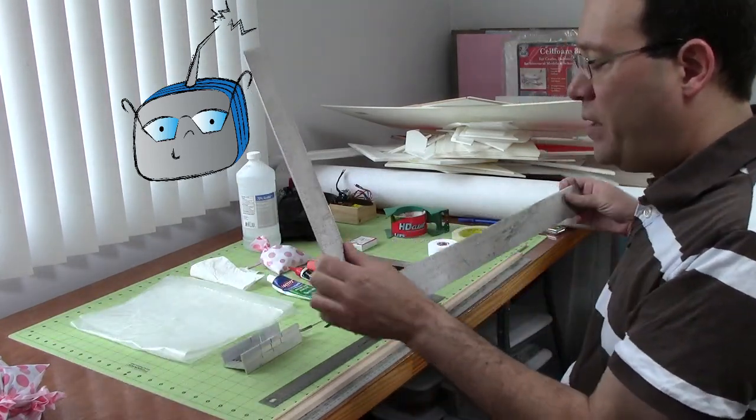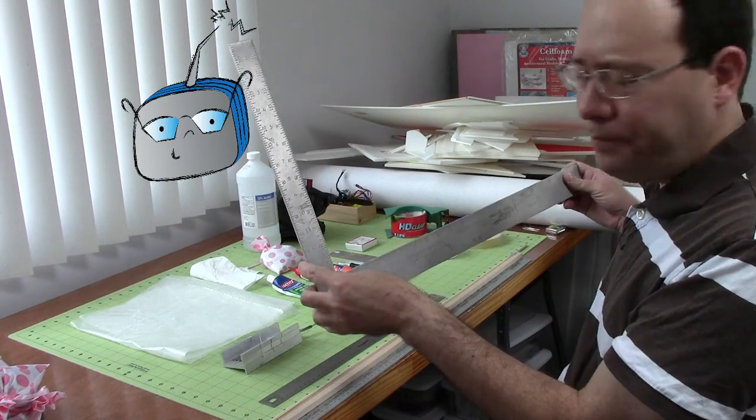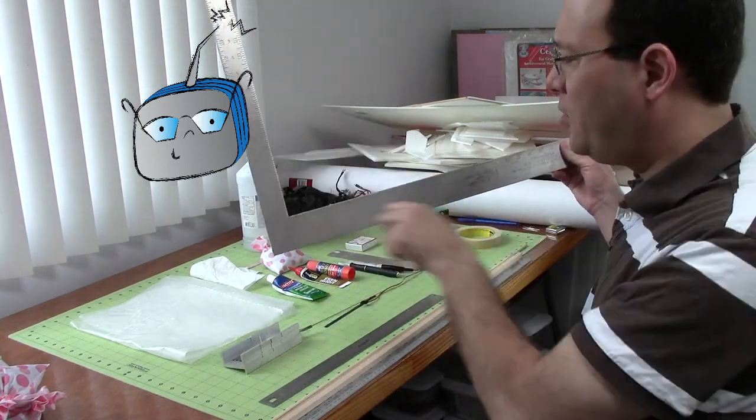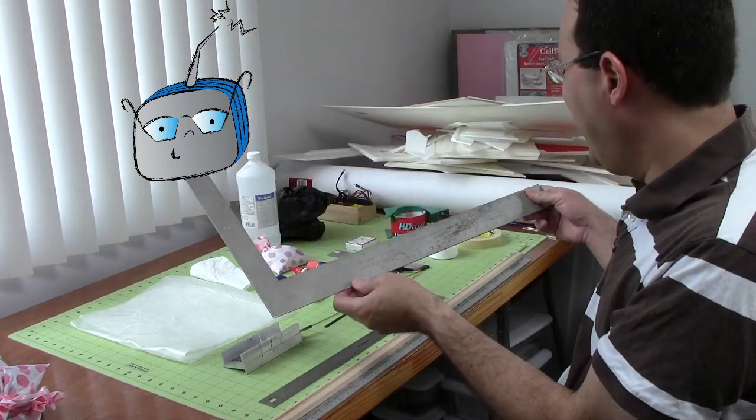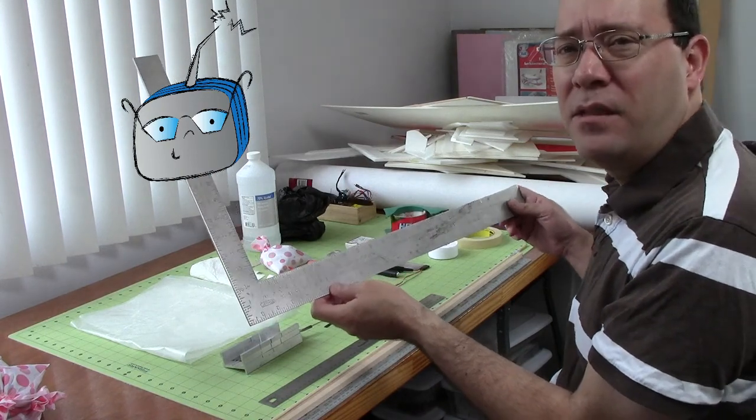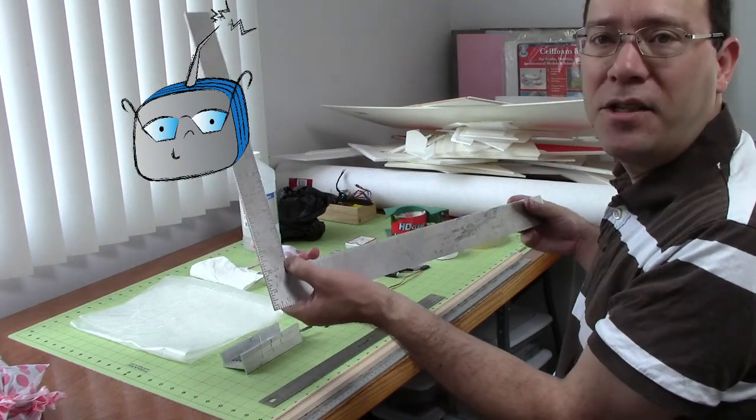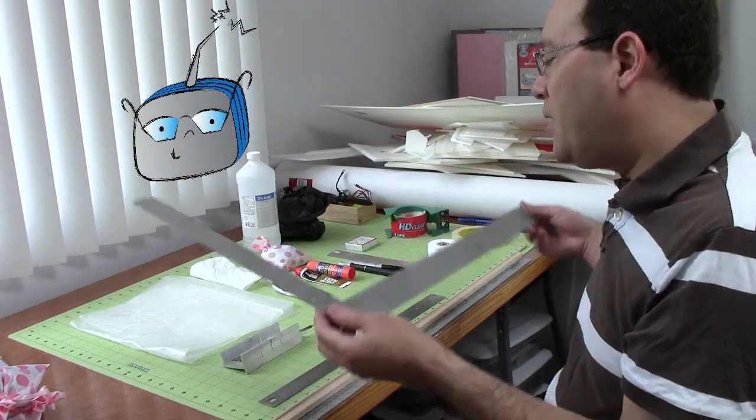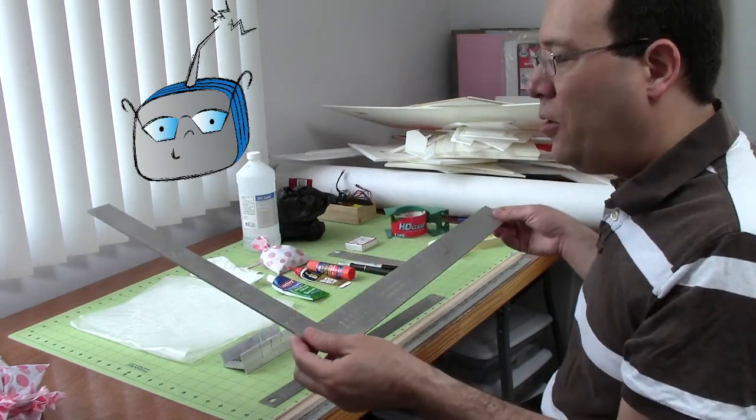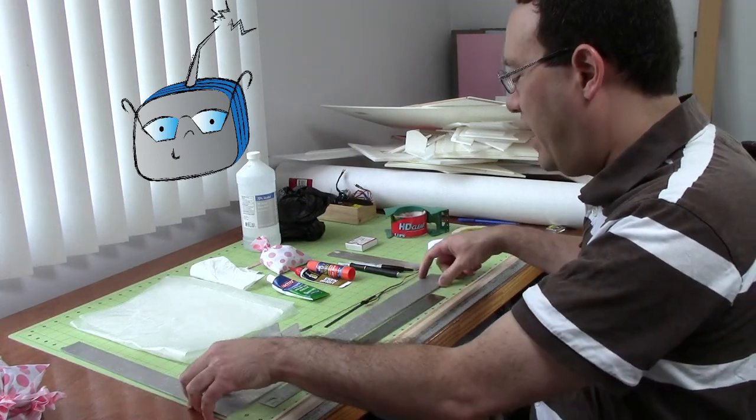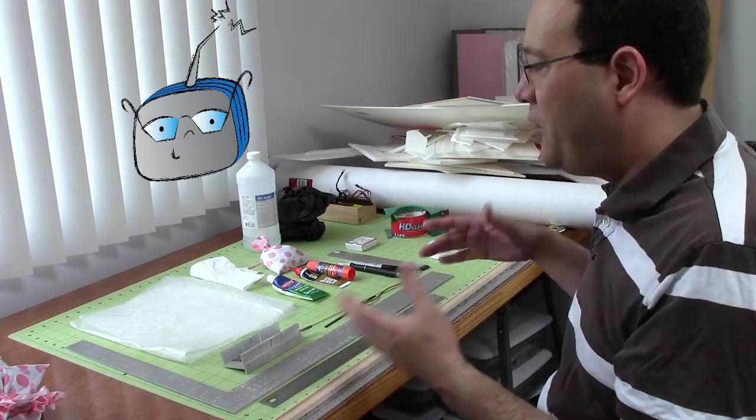I also have this metal T-square, or I don't want to call it an L-square. Honestly, I don't use this one all that much, but especially when I first lay out the lines on a sheet of foam board, so it can come in handy. But I wouldn't call it critical, because sometimes I use it, sometimes I don't.